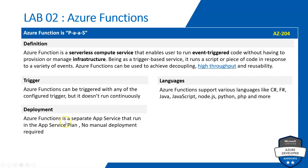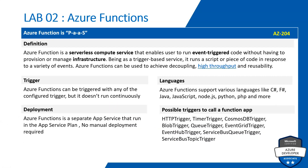Deployment: Azure Functions is a separate app service that runs in the App Service Plan, so there is no manual deployment required. If you remember from Lab 1, we developed web applications and deployed them manually through Azure CLI. In the case of Azure Functions, there is no need to deploy anything — it is taken care of by the system itself.